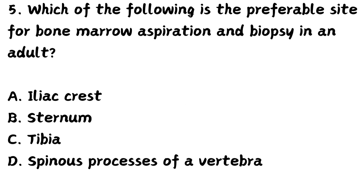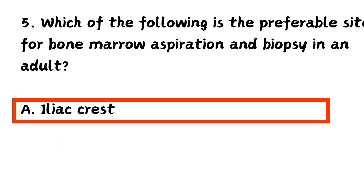Fifth question: which of the following is the preferable site for bone marrow aspiration and biopsy in an adult? Option A, iliac crest. Option B, sternum. Option C, tibia. Option D, spinous process of a vertebra. The right answer is Option A, iliac crest.